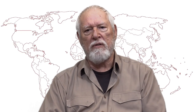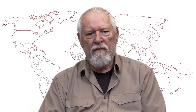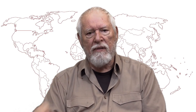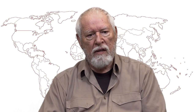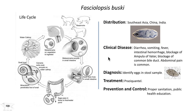Let's start with Fasciolopsis buski. Fasciolopsis buski is very closely related to Fasciola hepatica. The biology is similar in the sense that the parasite exists as a metacercaria on plant material — in this case, the water caltrop, which is a favorite food of many indigenous populations living in Southeast Asia and in China.